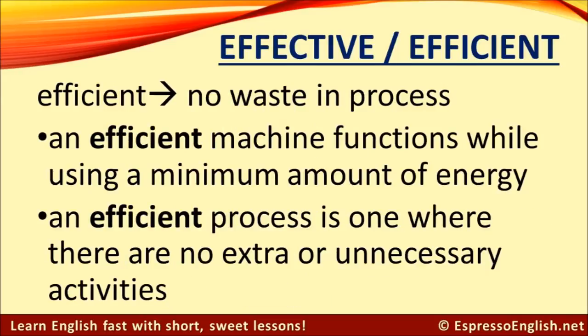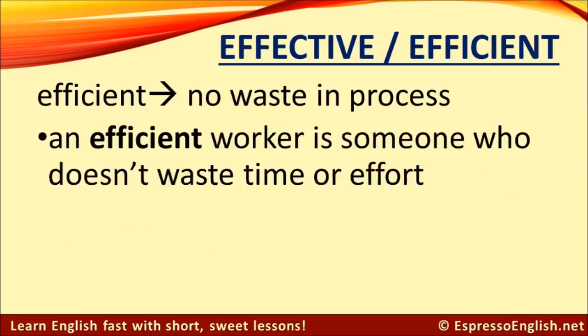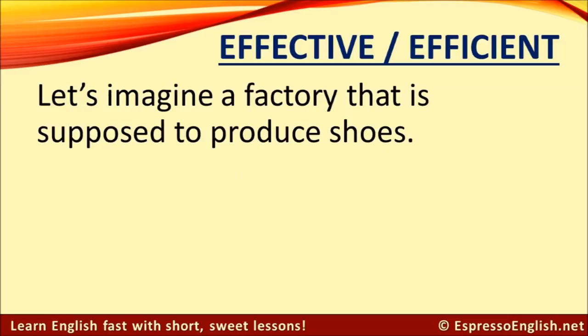Now look at these examples of things that are efficient, with no waste in the process. An efficient machine functions while using a minimum amount of energy. An efficient process is one where there are no extra or unnecessary activities. And an efficient worker is someone who doesn't waste time or effort.